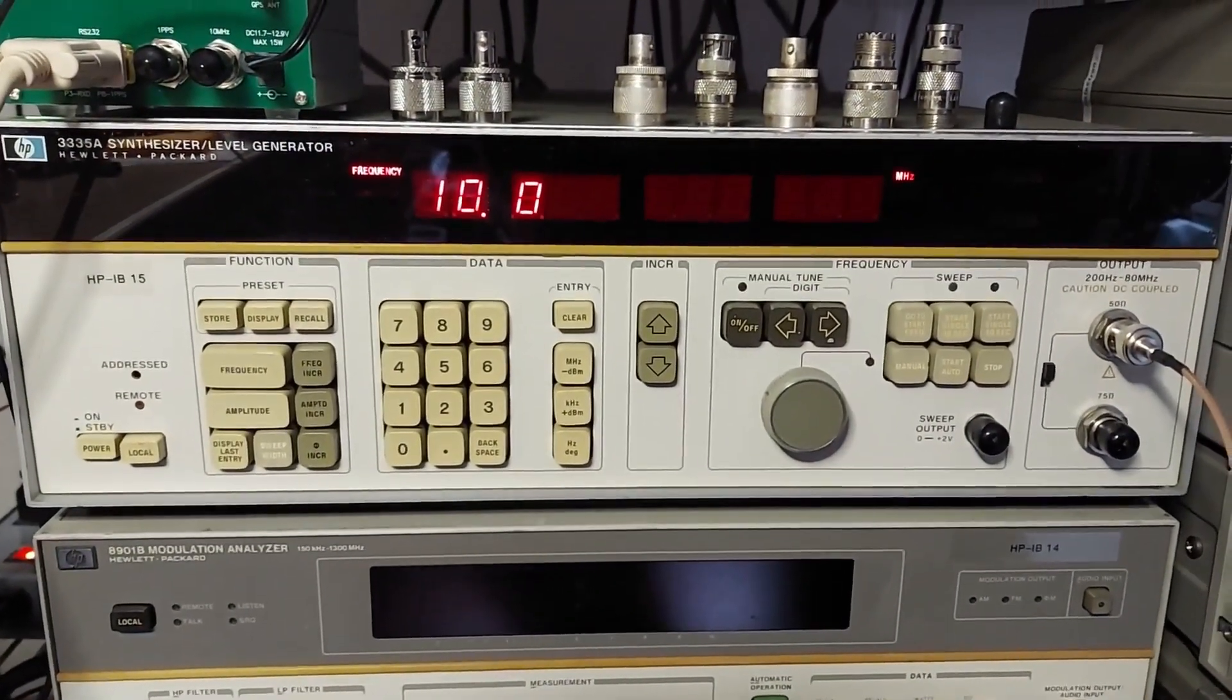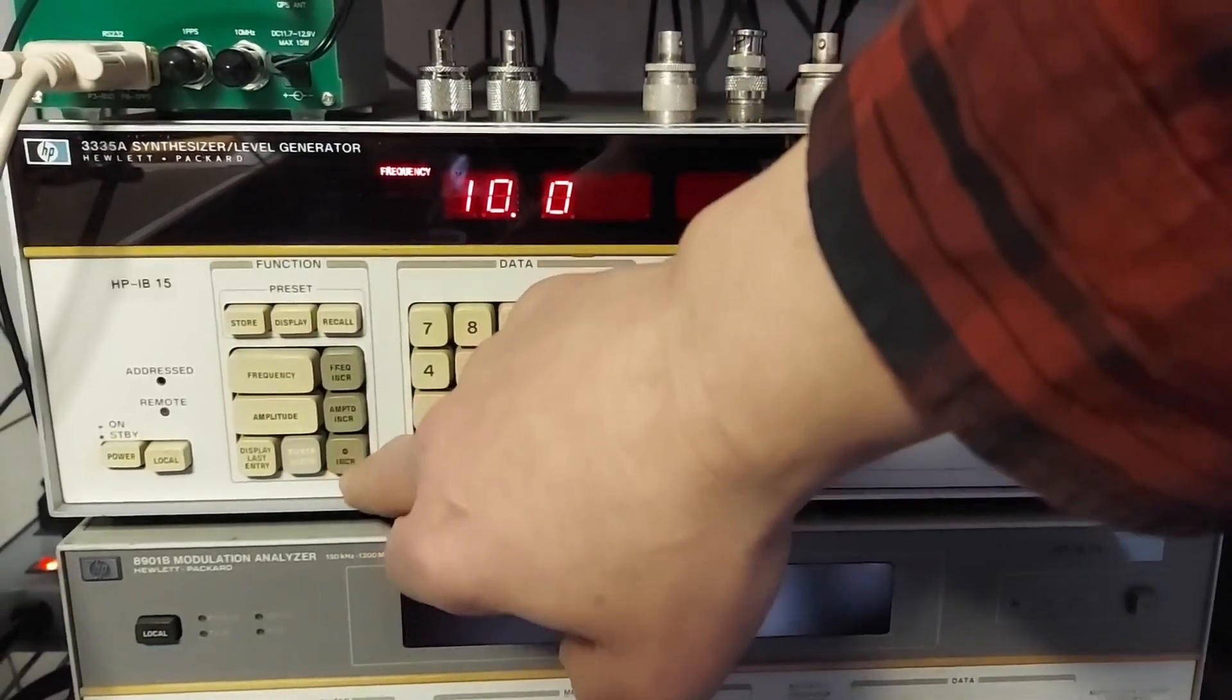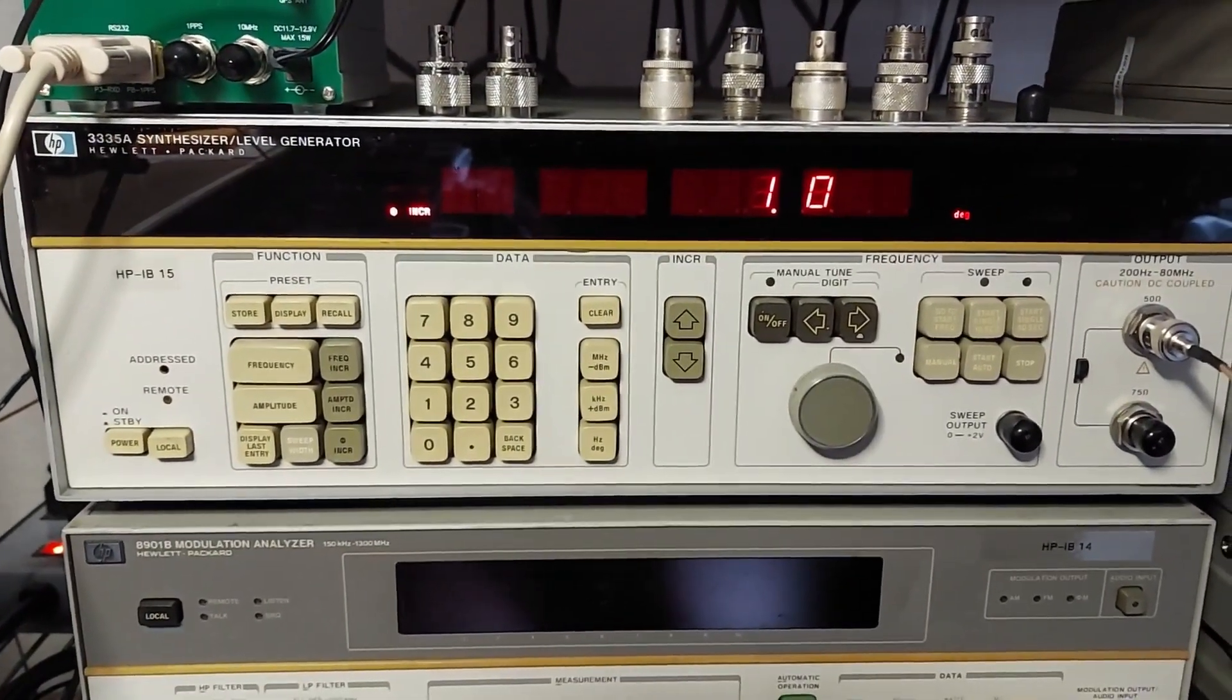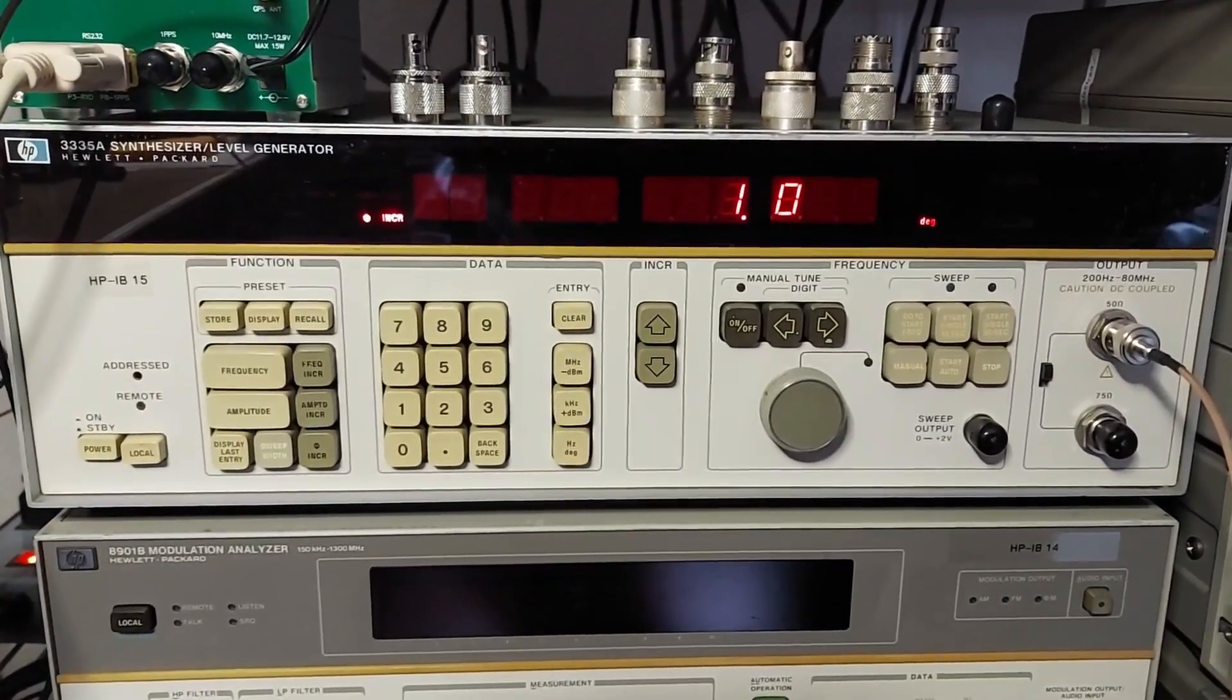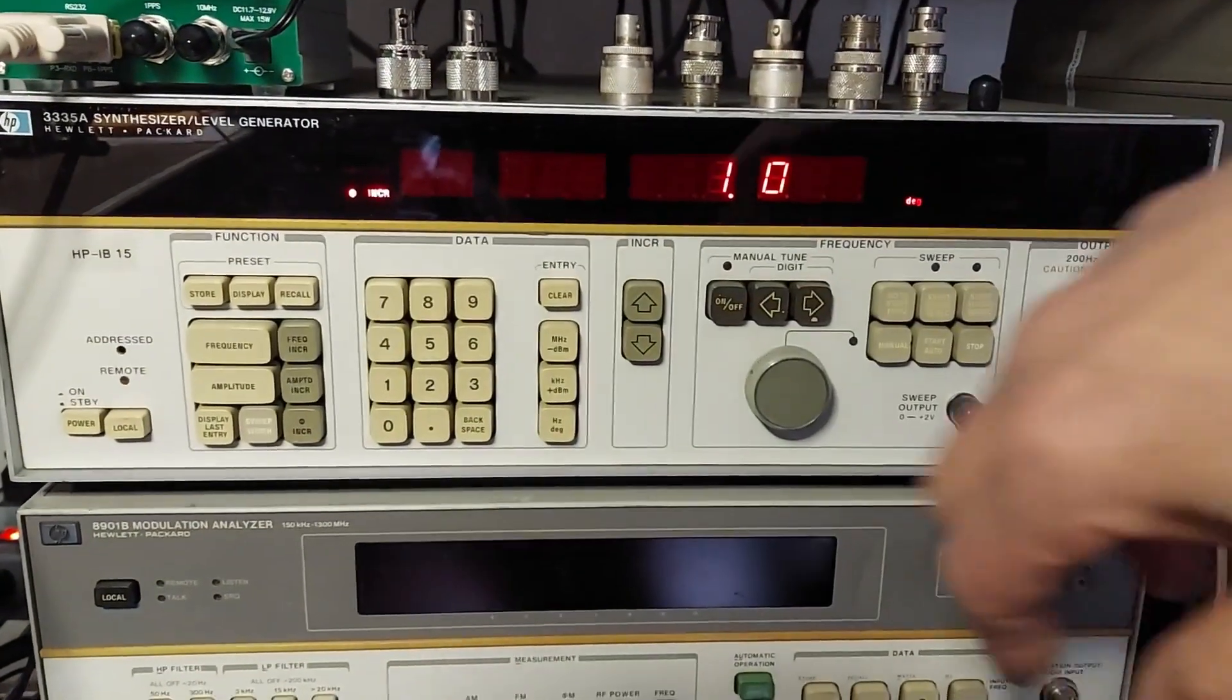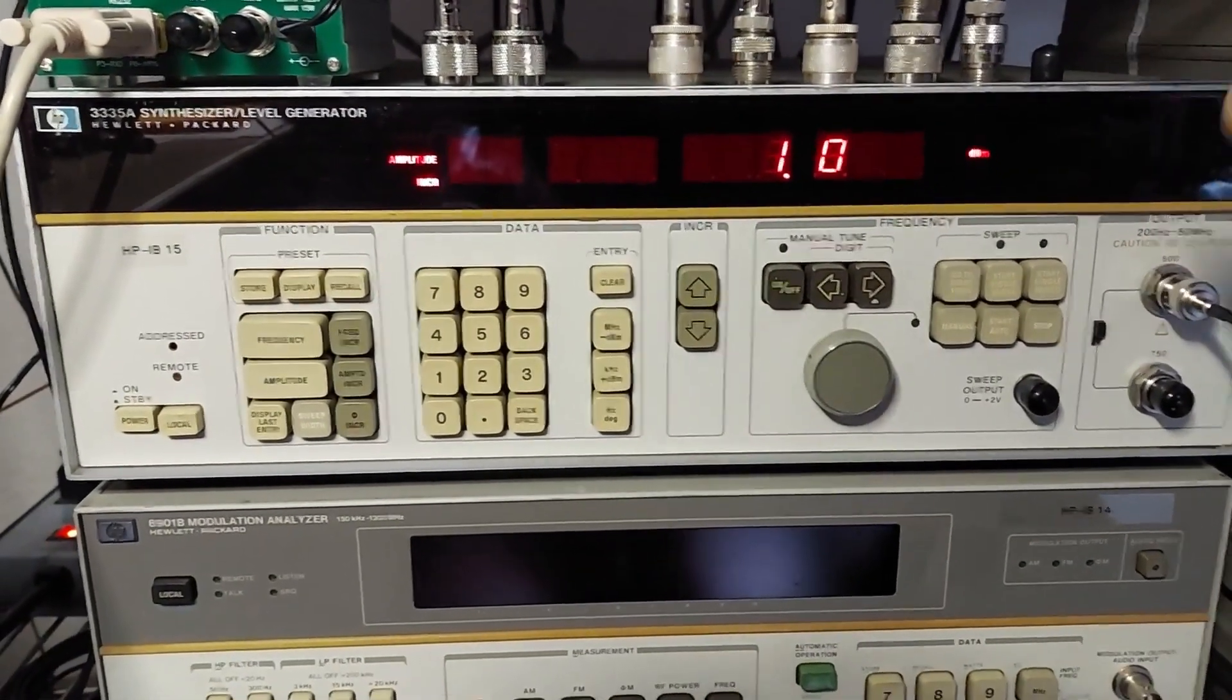Now there's some other functions here best used in conjunction with the increment buttons here. This will allow you to set the phase. This button here, it's the phase increment button. This allows you to set the phase relationship between the 10 megahertz output on the back of the instrument and the frequency output jack on the front, and I'll show that here in a few minutes.